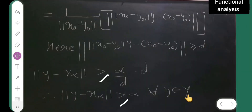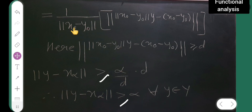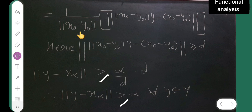I hope you all have understood this step — specially the step where d gets cancelled — and why alpha upon d comes here. Because the norm of x₀ minus y₀ was less than d upon α, taking the reciprocal gives α upon d, and then the d's cancel to yield α.